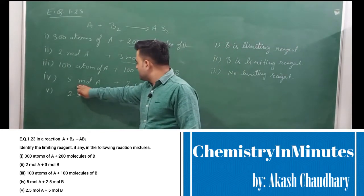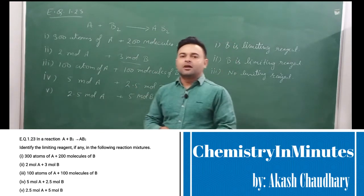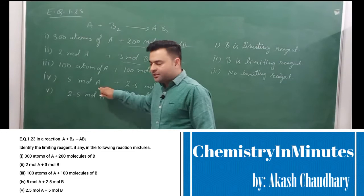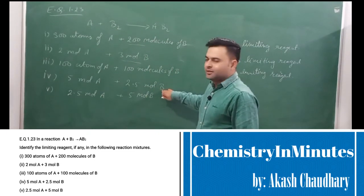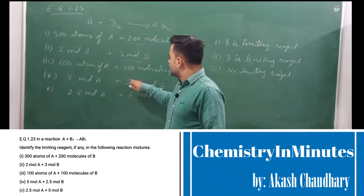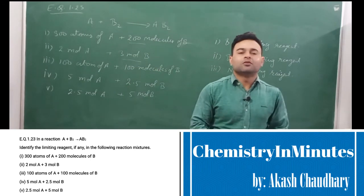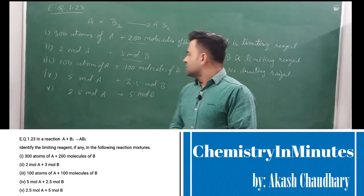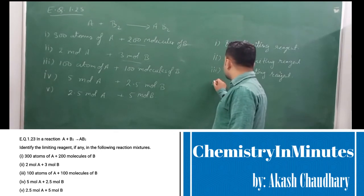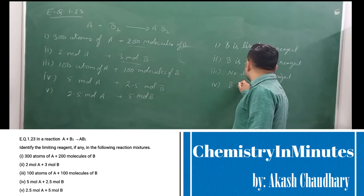In the fourth case, we have 5 moles of A and 2.5 moles of B. We take 5 mole atoms of A and 2.5 mole atoms of B, so B₂ molecules will be 1.25 moles. So B₂ will be the limiting reagent. In the fourth case also, B is the limiting reagent.